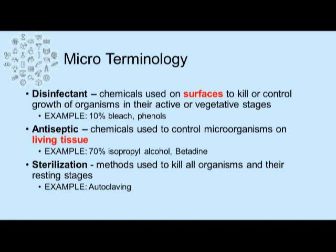Antiseptics are chemicals used to control microorganisms on living tissue, and an example of an antiseptic is 70% isopropyl alcohol or betadine. And when all organisms need to be neutralized, sterilization can be used to kill all stages of an organism. An example of sterilization includes autoclaving.